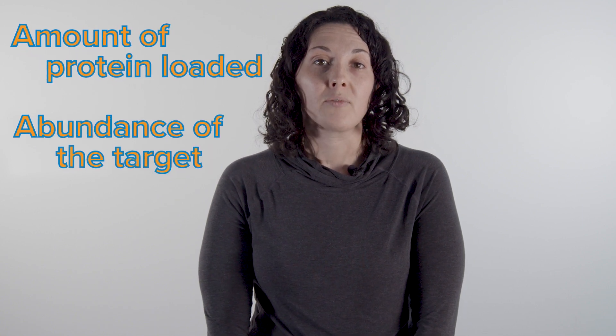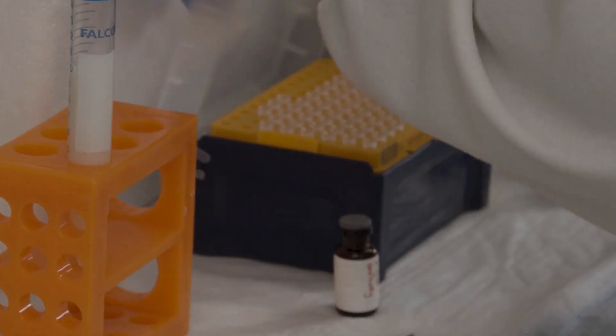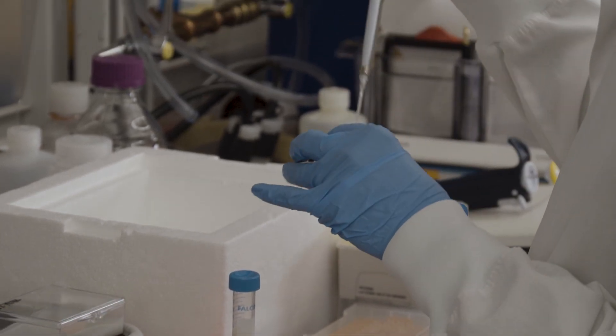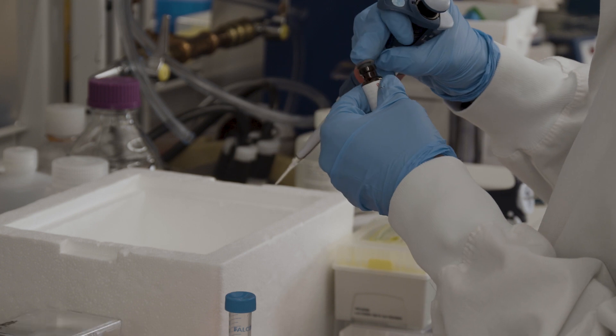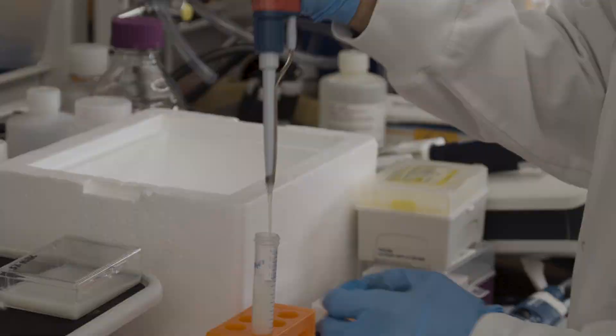You'll need your antibody diluted in a blocking buffer in a large enough amount to cover the membrane during incubation. The concentration of the primary antibody depends on a number of factors, such as the amount of protein loaded, abundance of the target, and affinity of the antibody to its target. You may need to try a range of different concentrations before uncovering the ideal conditions. If the ideal concentration for your conditions are unknown, try starting with one microgram per milliliter and optimize from there.